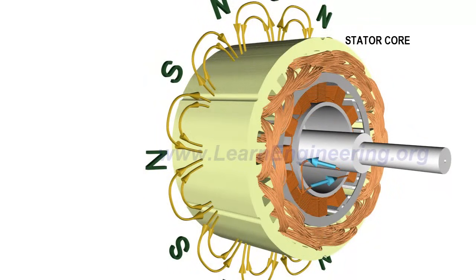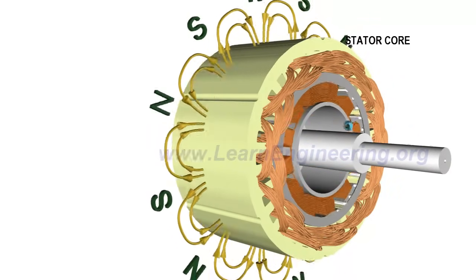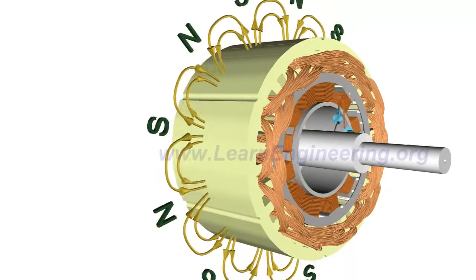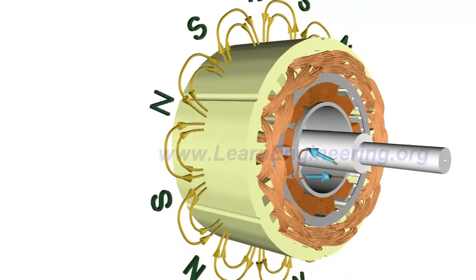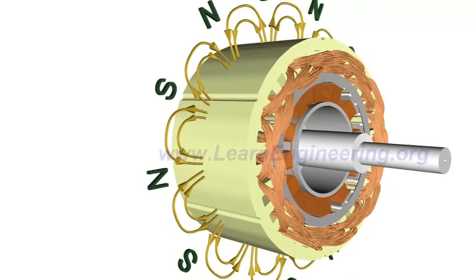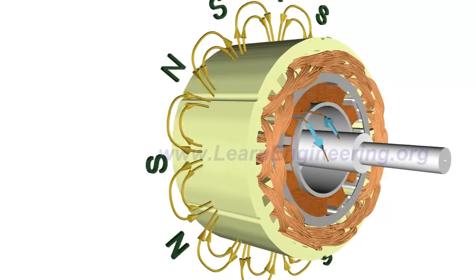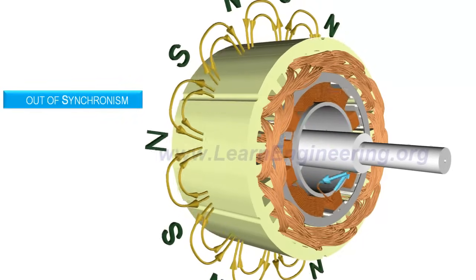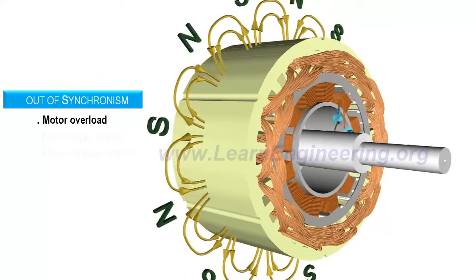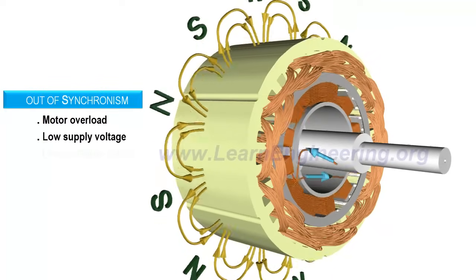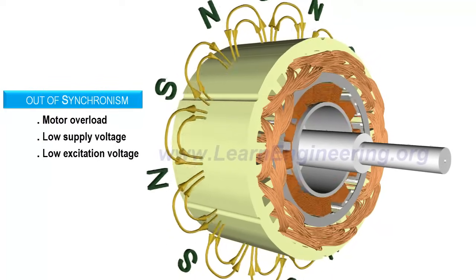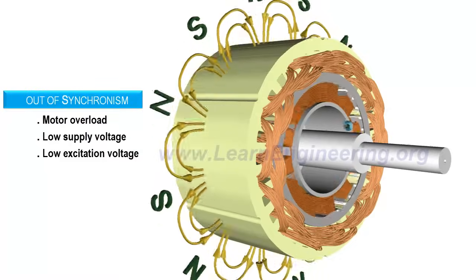Synchronous motors will produce constant speed irrespective of motor load only if the load is within the capability of motor. If external torque load is more than torque produced by the motor, it will slip out of synchronism and will come to rest. Low supply voltage and excitation voltage are other reasons of going out of synchronism.